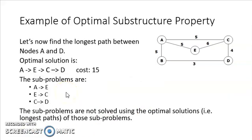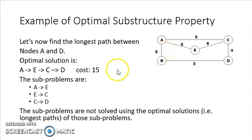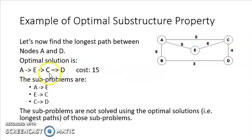Now let's see a problem that does not satisfy the optimal substructure property. Consider finding the longest path between nodes A and D. The longest path between A and D is A-E-C-D with a cost of 15. The sub-problems in this solution are going from A to E, then E to C, then C to D.